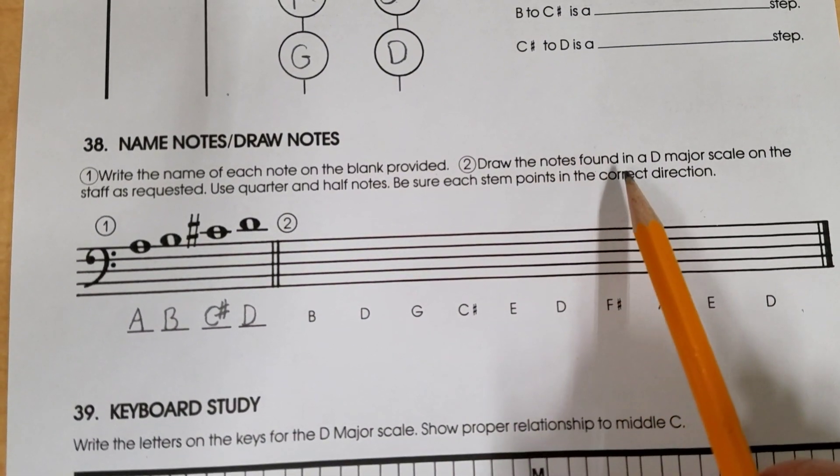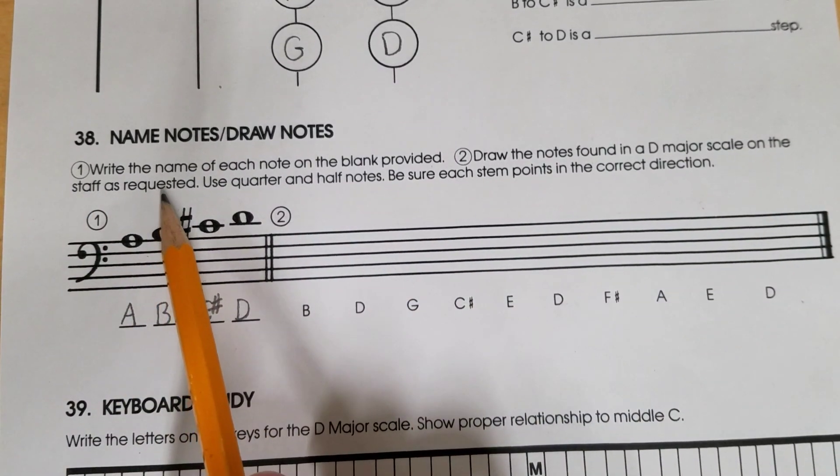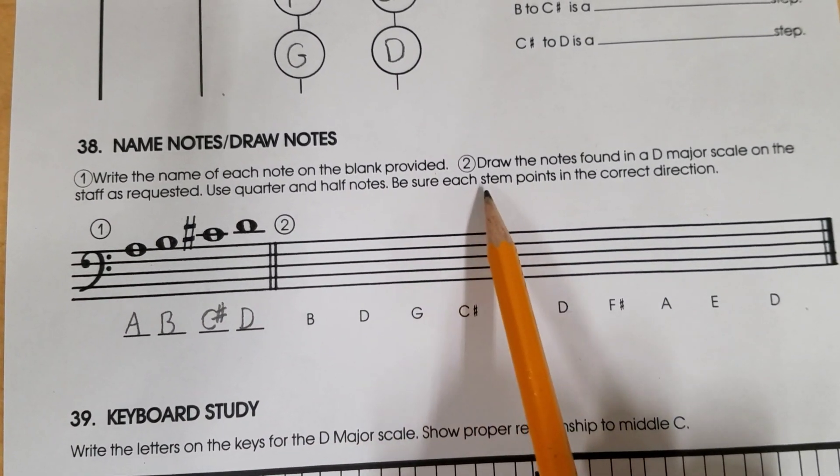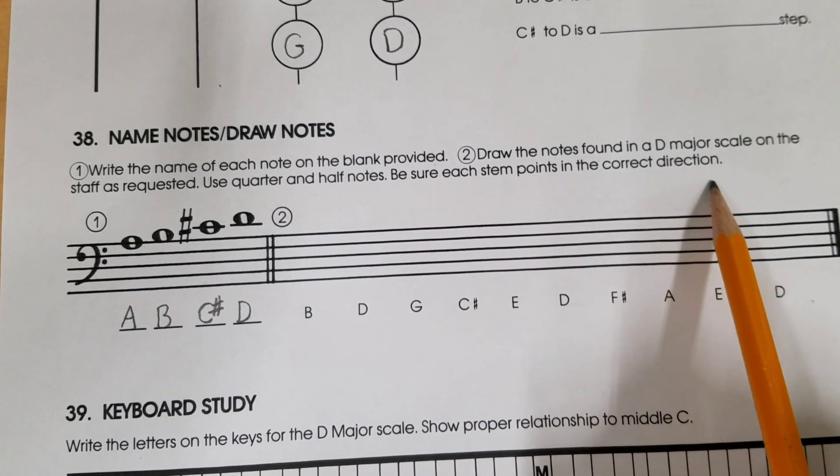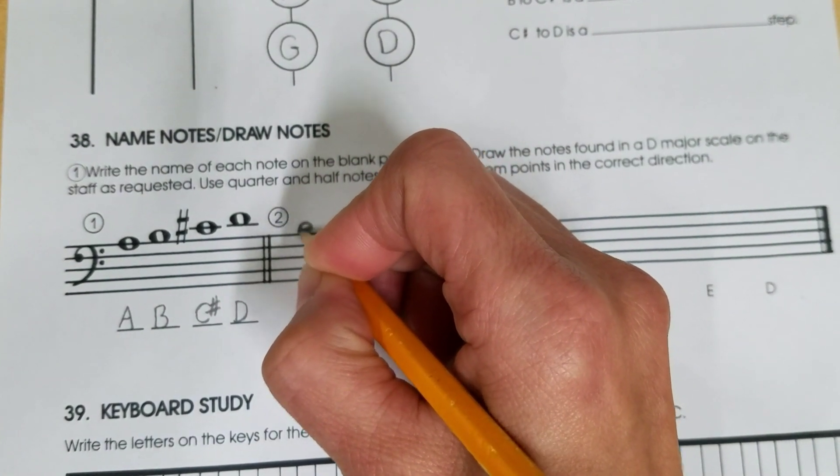Draw the notes found in a D major scale on the staff as requested. Use quarter and half notes. Be sure each stem points in the correct direction. Here's an example of B, but we're going to do a quarter note.